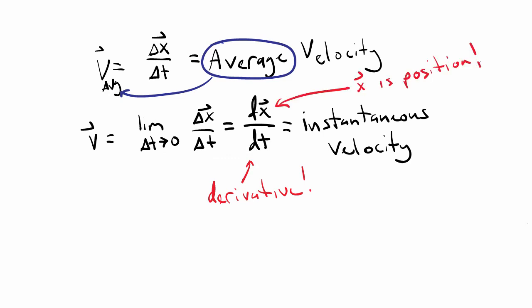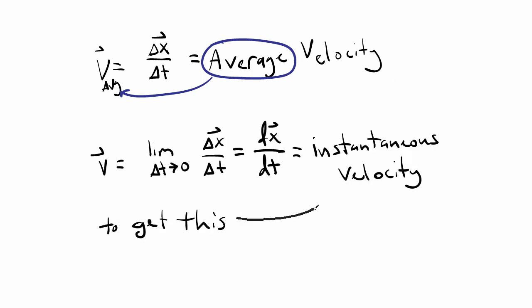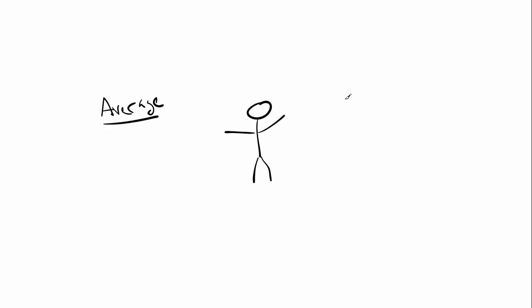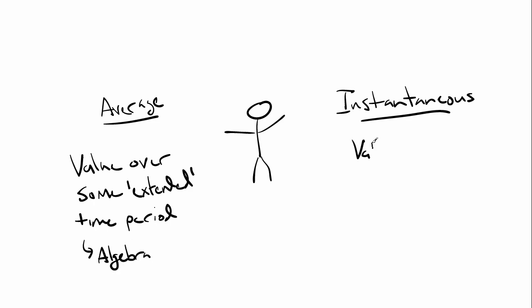So in order to determine the instantaneous velocity at some point during the trip from campus to home and back, we need to be able to describe the position as a function of time. That function could be anything really, but if I know the function then I can find the velocity at any point. As it turns out, these two ways of quantifying physical quantities, by the average value and the instantaneous value, show up in other parts of physics as well. For example, acceleration.